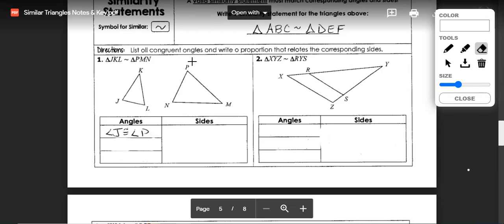Looking at this we can say that angle J would be congruent to angle P. Remember that in order to be similar the angles are congruent and the sides are proportional. Angle K is going to be congruent to angle M.